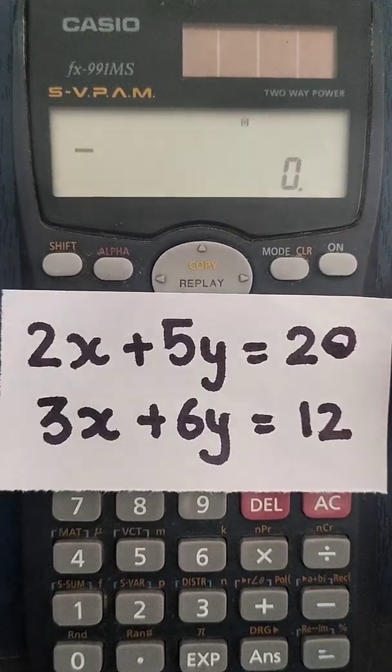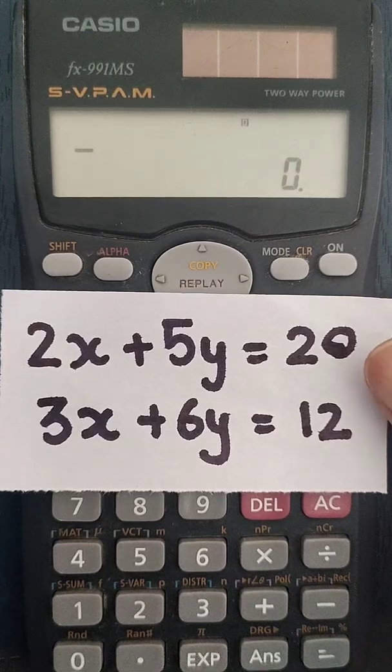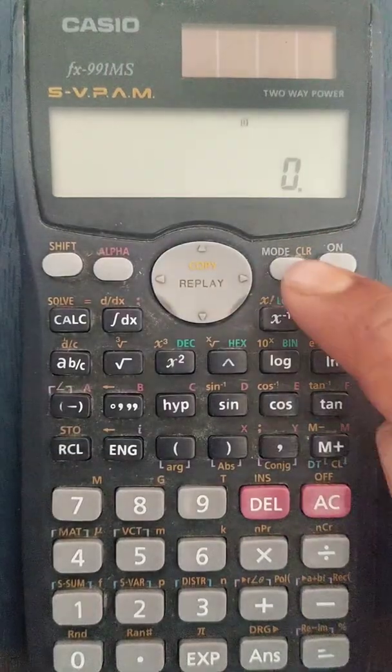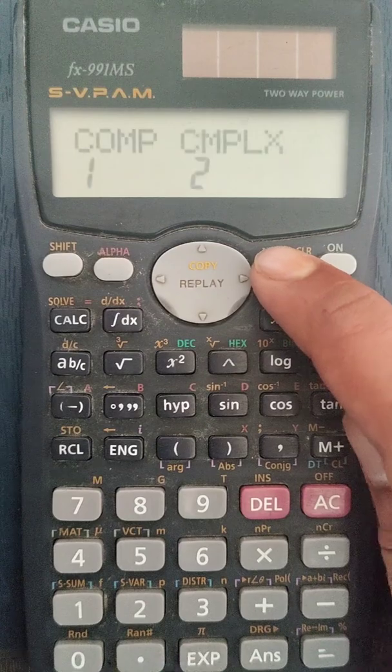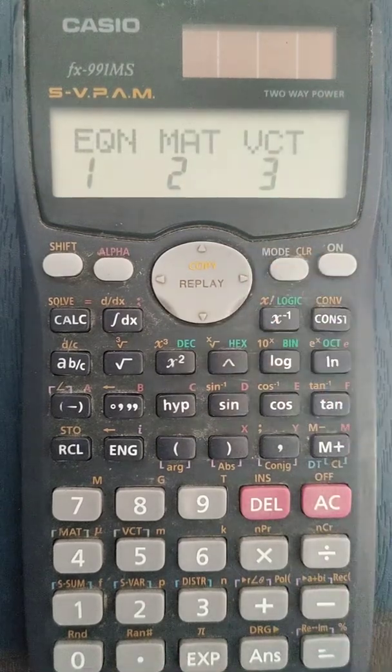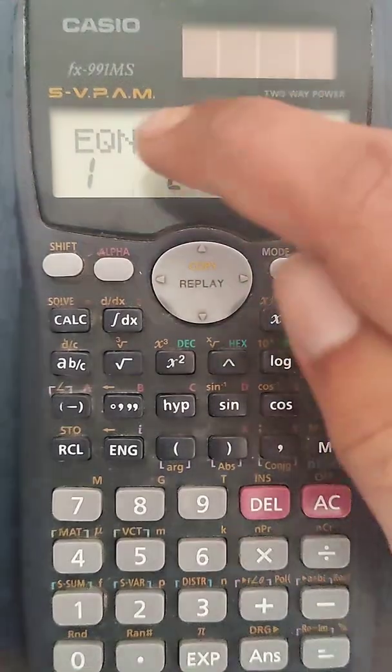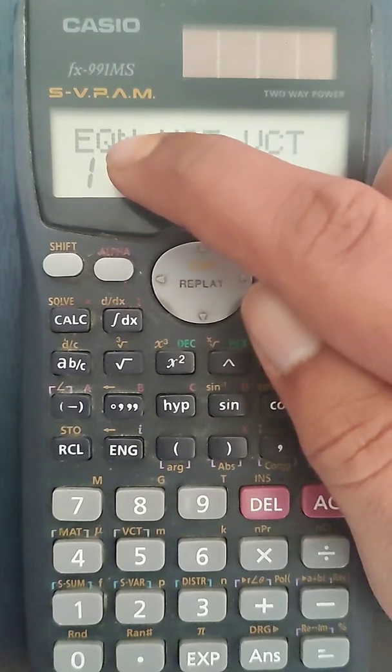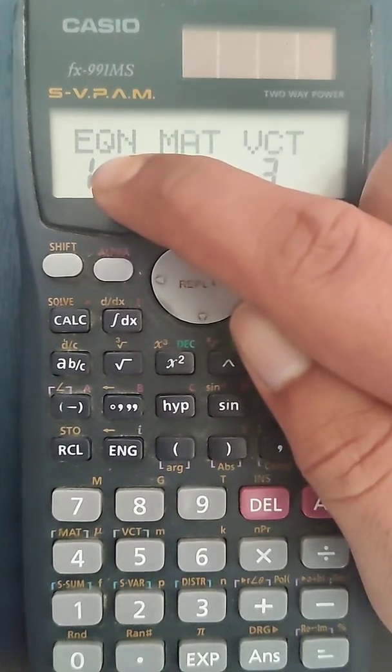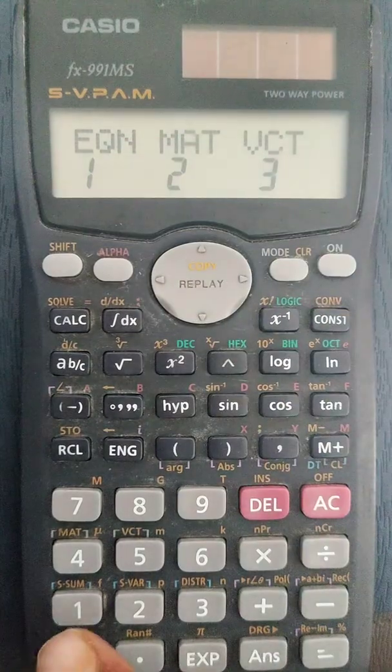Now to do that, first of all, we will enter into equation mode. To do that, we will press this mode three times: 1, 2, 3. You will see here the equation is written and below that we have number 1. So to enter into the equation mode, we will press 1.